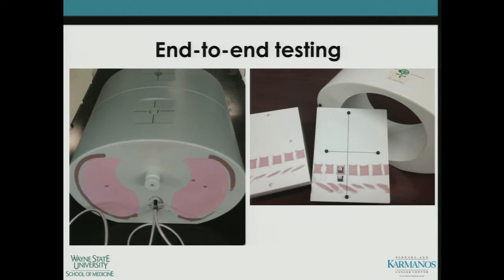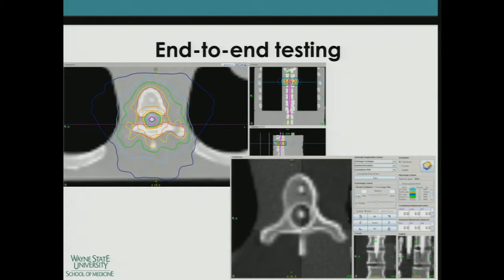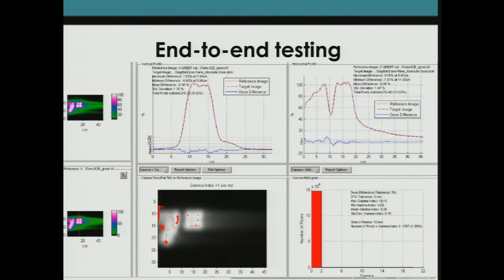We went out and bought ourselves a fancy end-to-end phantom. We have the ability to make measurements in the spine, spinal cord vertebral bodies, simulated lung tumors of various sizes, film and OSLDs, as you can see here in this plane through the spinal cord. We made a lot of measurements with this end-to-end phantom. This gives you an example of one of the plans we created, the IGRT, and then some of the film results coming from the film placed in that end-to-end phantom.